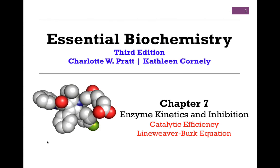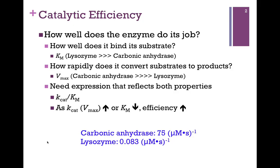In our next lesson on enzyme kinetics and inhibition, we want to look at catalytic efficiency in the Lineweaver-Burk equation. Recall from our last lesson that we had two measures for catalytic efficiency. First, Km was a measure of how well the enzyme bound its substrate, and we saw quite a difference — lysozyme had a much higher affinity for its substrate than carbonic anhydrase for its. We also saw another measure, Vmax: how rapidly does the enzyme convert substrates to products? Carbonic anhydrase was much faster than lysozyme. So what we need is an expression that reflects both of these properties, and that is Kcat over Km.